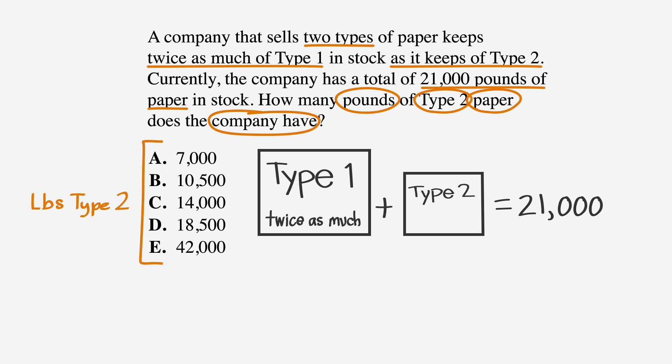So, we'll say that 14,000 is the amount of Type 2. Let's label our Type 2 box 14,000. Since there's twice as much of Type 1, we can multiply our 14,000 times 2, which gives us 28,000. Let's write that below our Type 1 box. If we add these two amounts, we'll see that 28,000 plus 14,000 does not equal 21,000. So, let's cross out C.